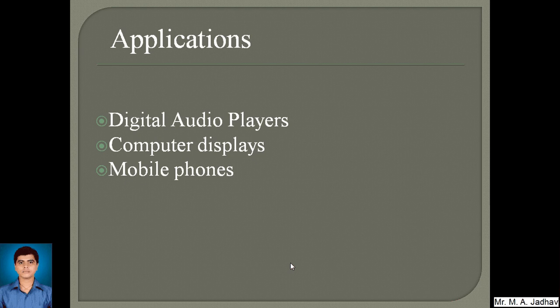Applications of capacitive proximity sensors include digital audio players, computer displays, mobile phones, and other consumer electronics. Proximity sensors measure the nearness of an object. So basically, this was the information regarding two types of proximity sensors — inductive type and capacitive type. The remaining types can be discussed in another class. Thank you.